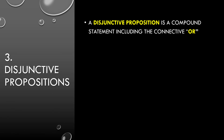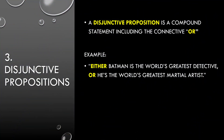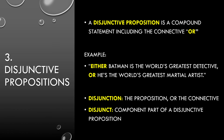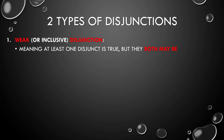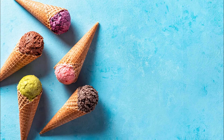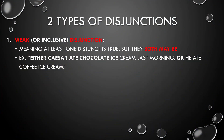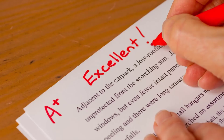A disjunctive proposition is a compound statement built around the connective 'or' or 'either…or.' For example: 'Either Batman is the world's greatest detective or he's the world's greatest martial artist.' A disjunction is either the disjunctive proposition as a whole, or more properly the connective itself. A disjunct is one of the component parts. There are two types: the weak or inclusive disjunction — at least one disjunct is true, but both might be — and the strong or exclusive disjunction — only one disjunct is true and the other is false, typically involving contradiction. A disjunction is considered true as long as one of the disjuncts is true.